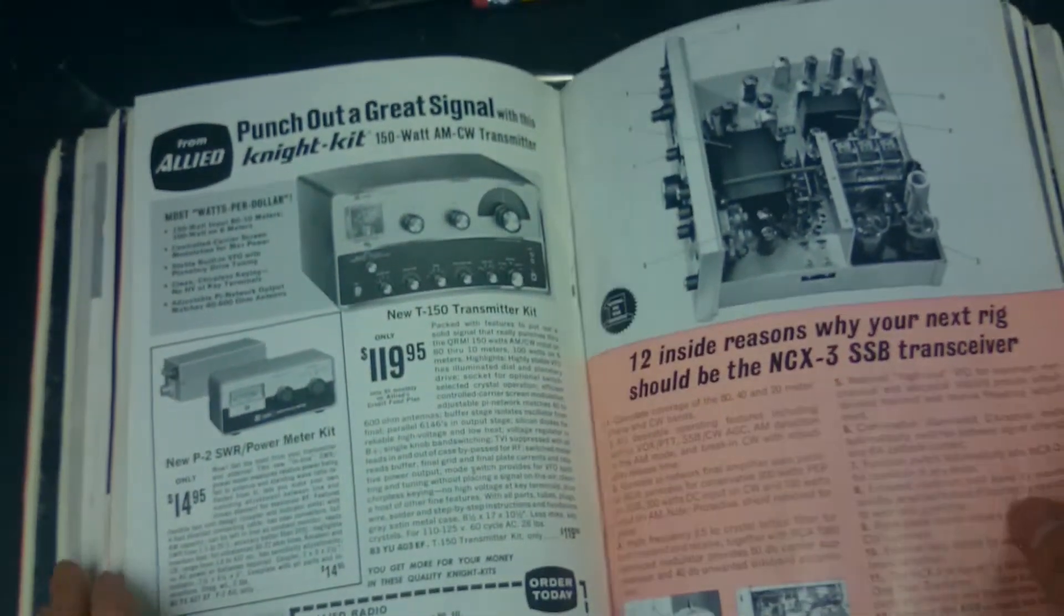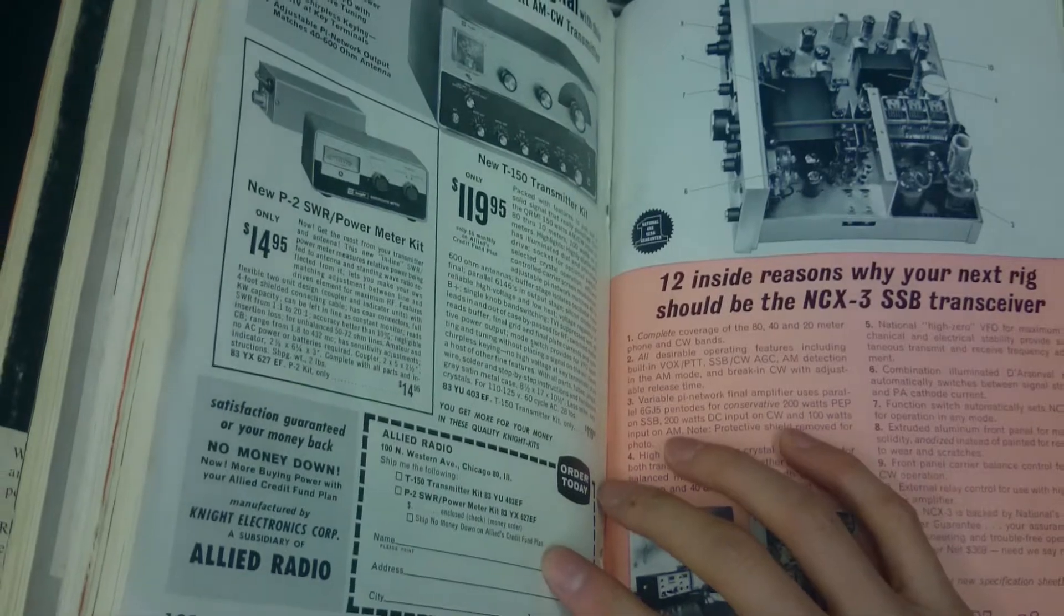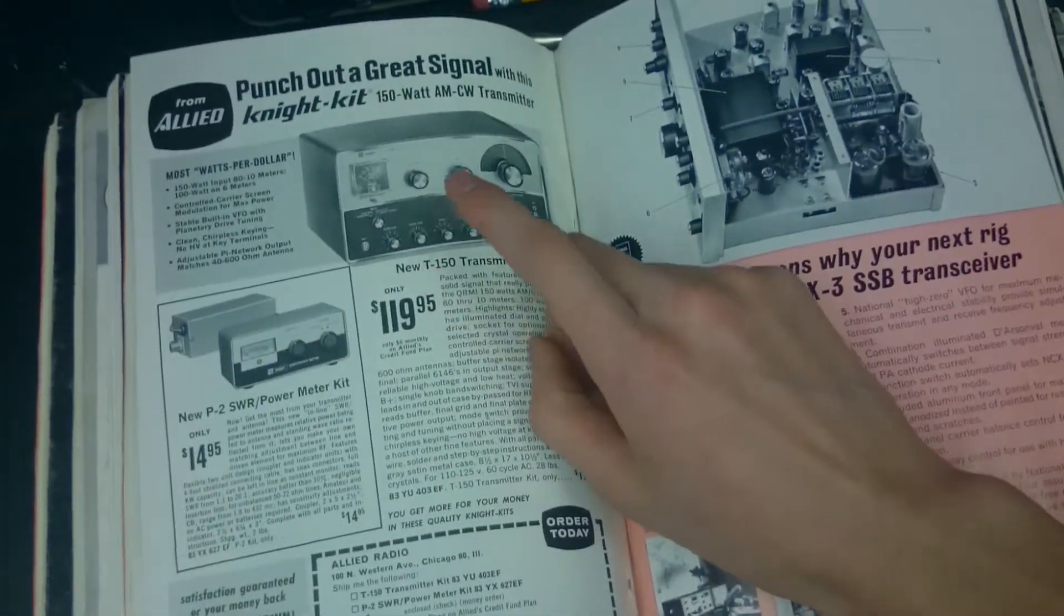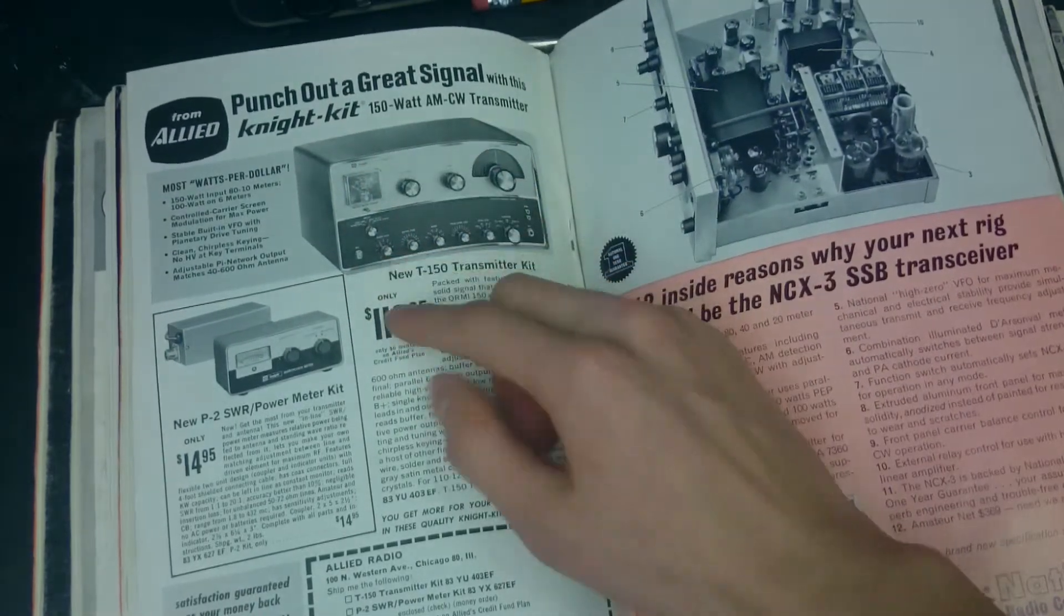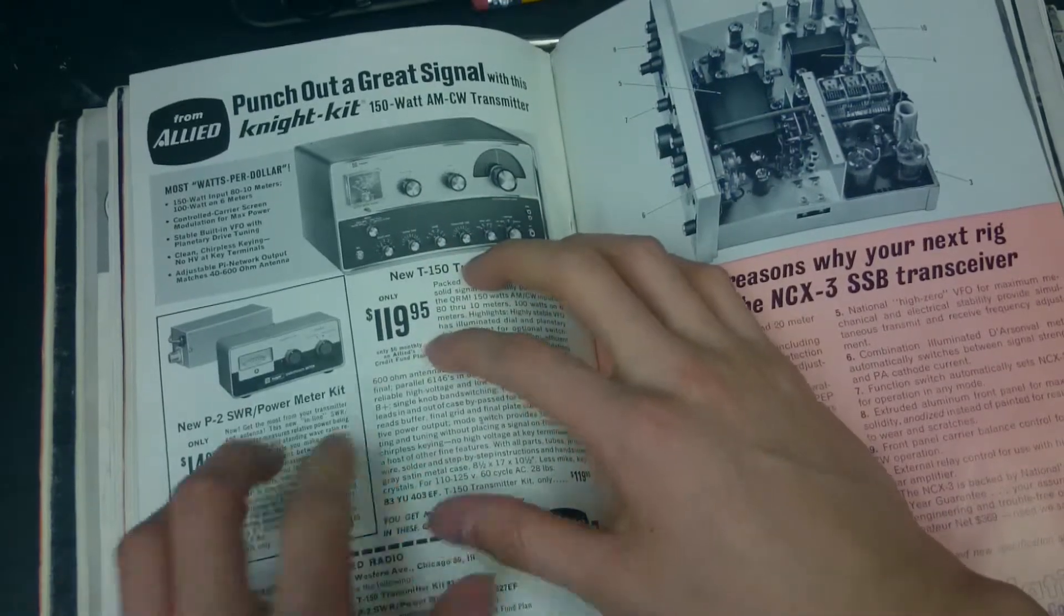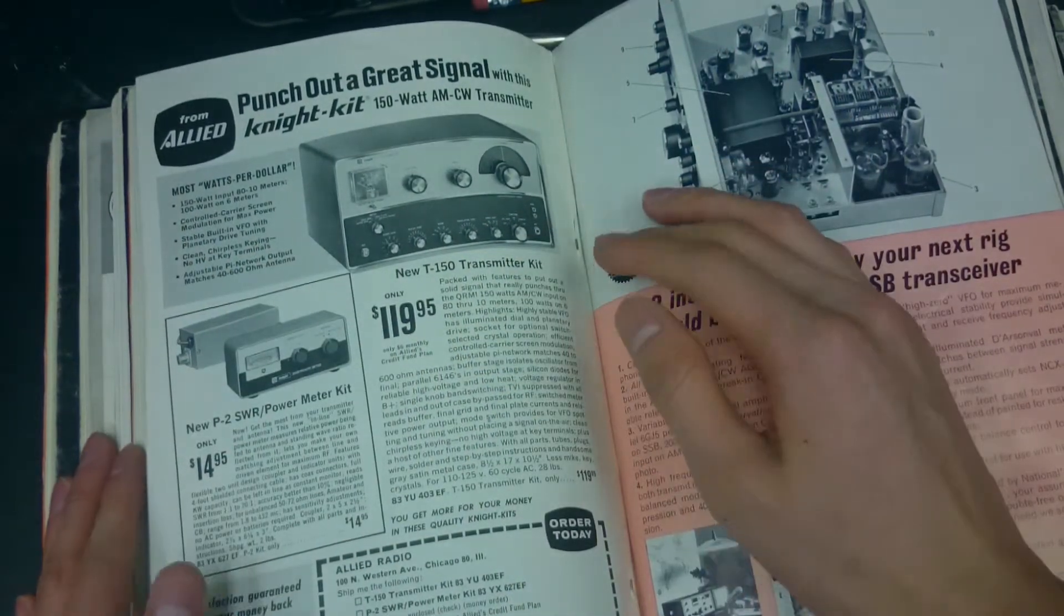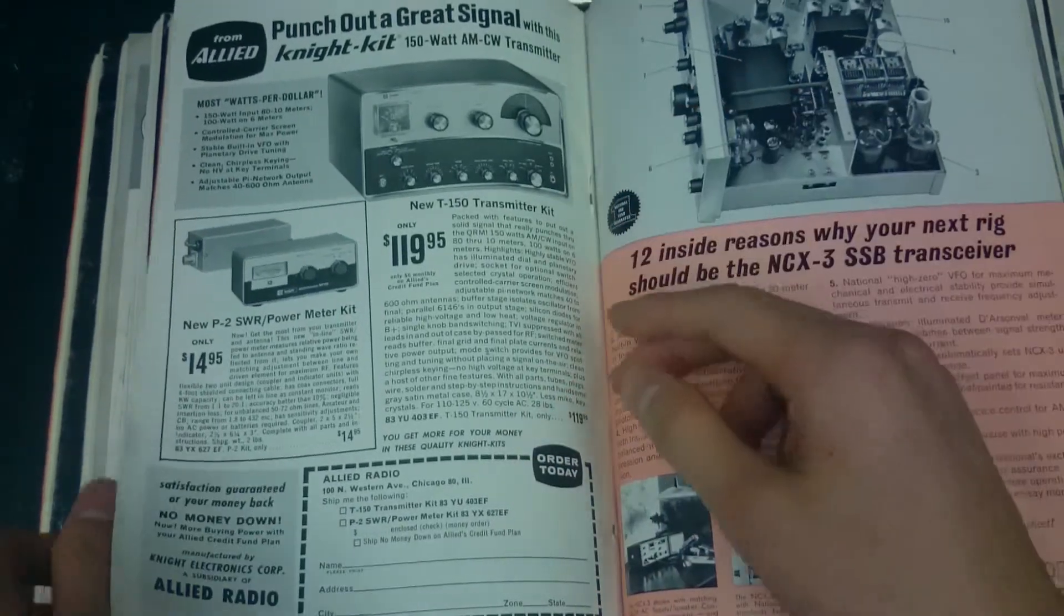What I really want to do now is figure out the price of this Knight generator in its original form. I've started digging through QST magazines hoping to find an advertisement for it. I wasn't lucky finding a direct advertisement for that particular kit, but I do have a 1963 volume of QST with a mention of Knight.